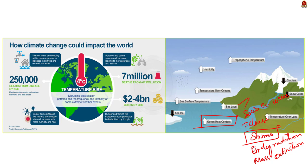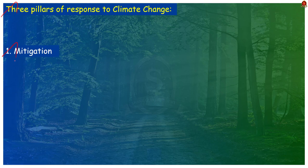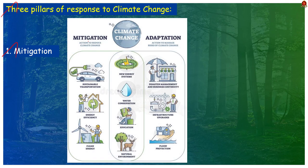Depending on how we respond to global warming, we can limit the impacts. Just remember these three pillars of response to global warming — you can make note and write them in your main answer as well. The first pillar is mitigation, which deals with slowing the rate of global warming by reducing emissions and stabilizing the level of heat-trapping greenhouse gases in the atmosphere.